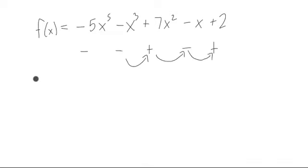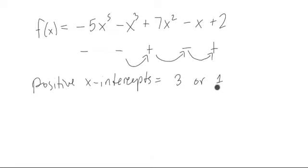This means that the total number of positive x-intercepts is equal to either three or any even number less such that I stay above or equal to zero. So three or one, since one is two less than three. So that's the number of possible positive x-intercepts.